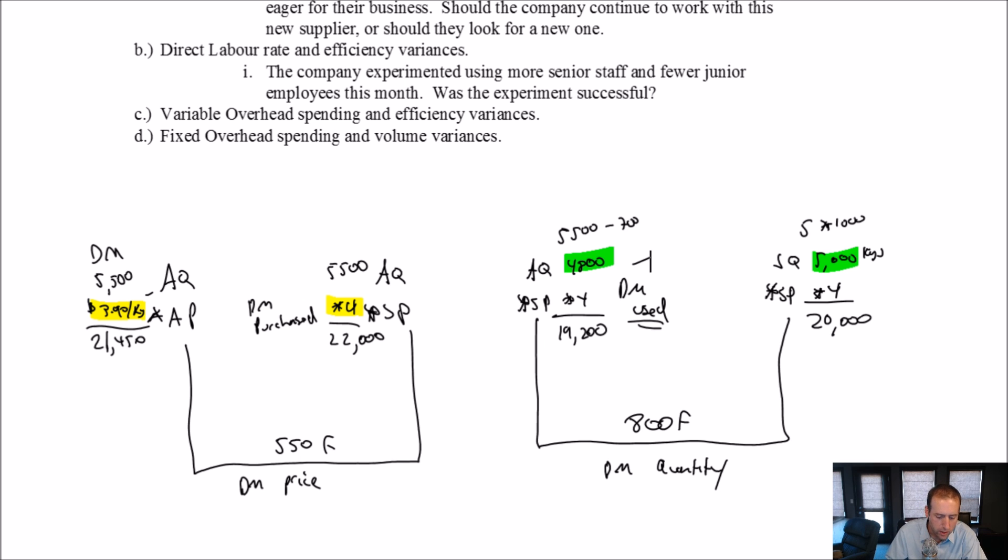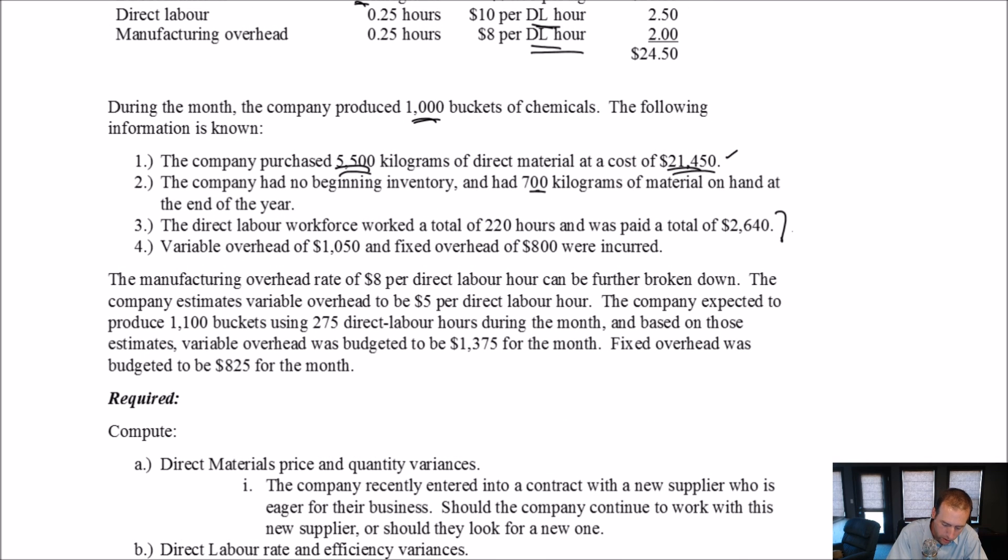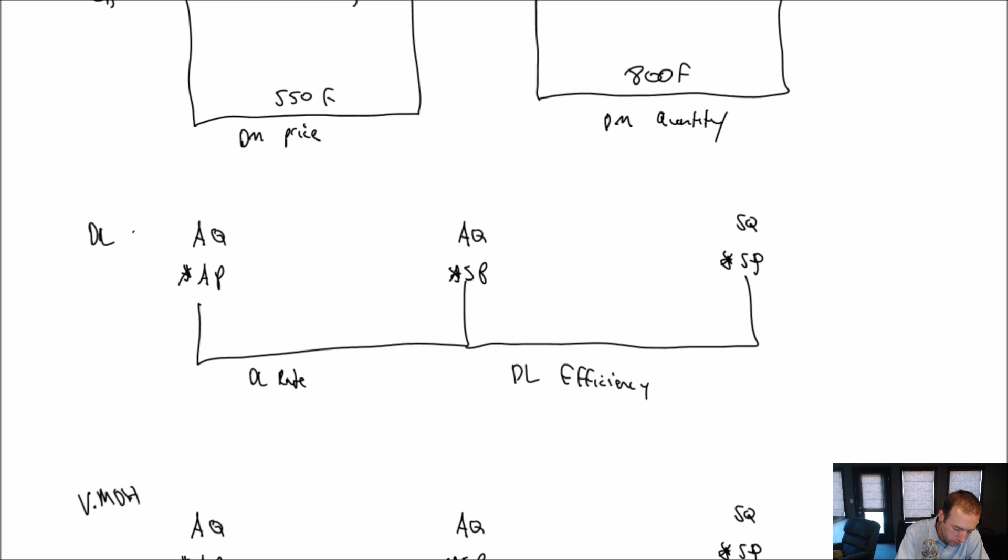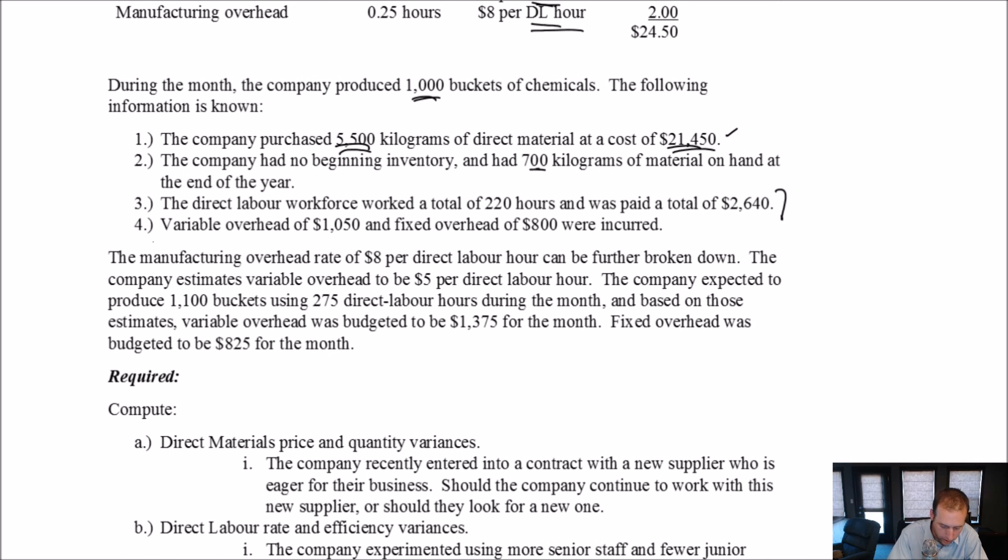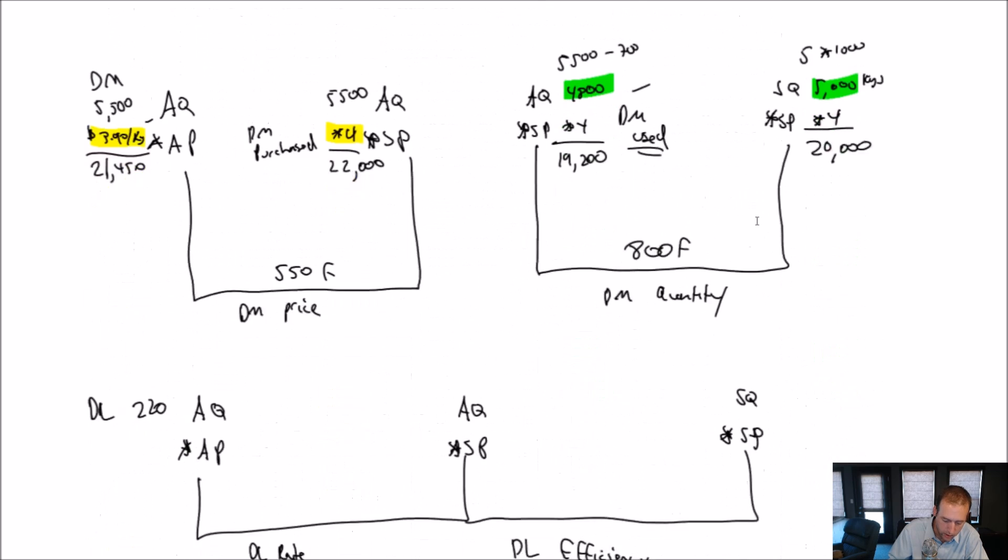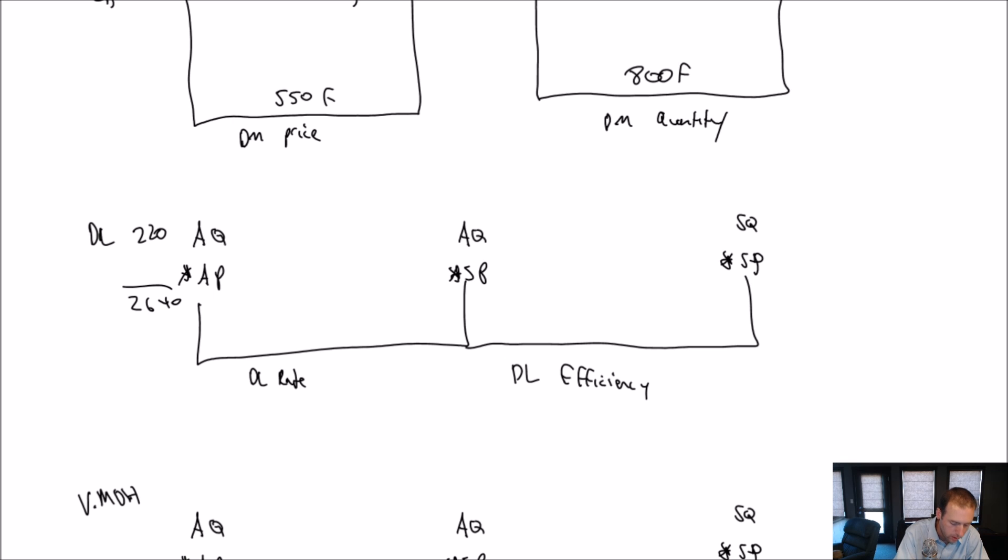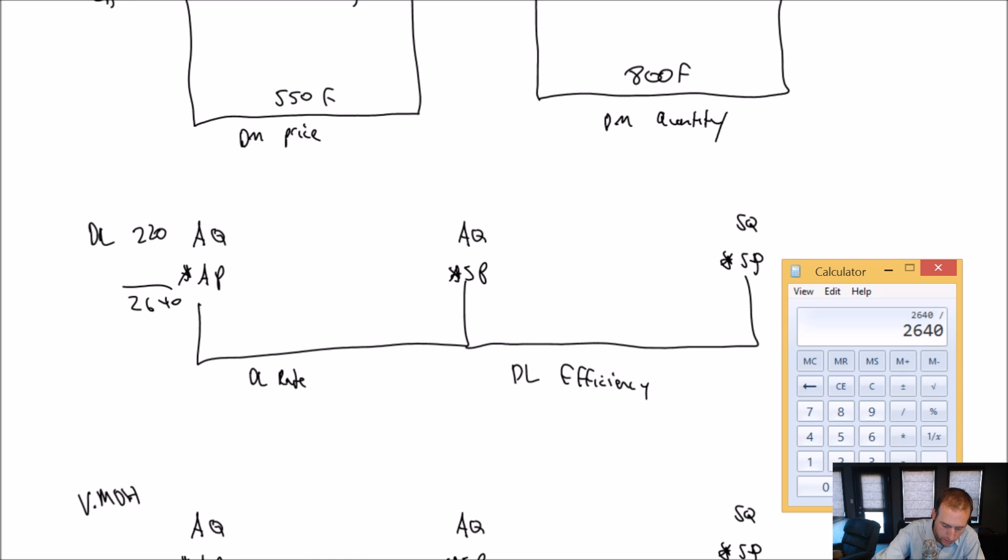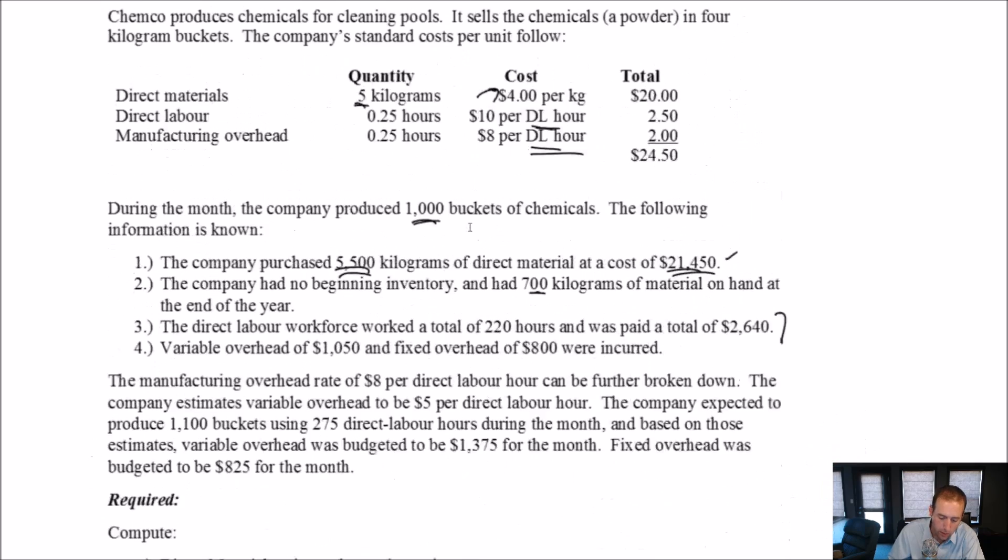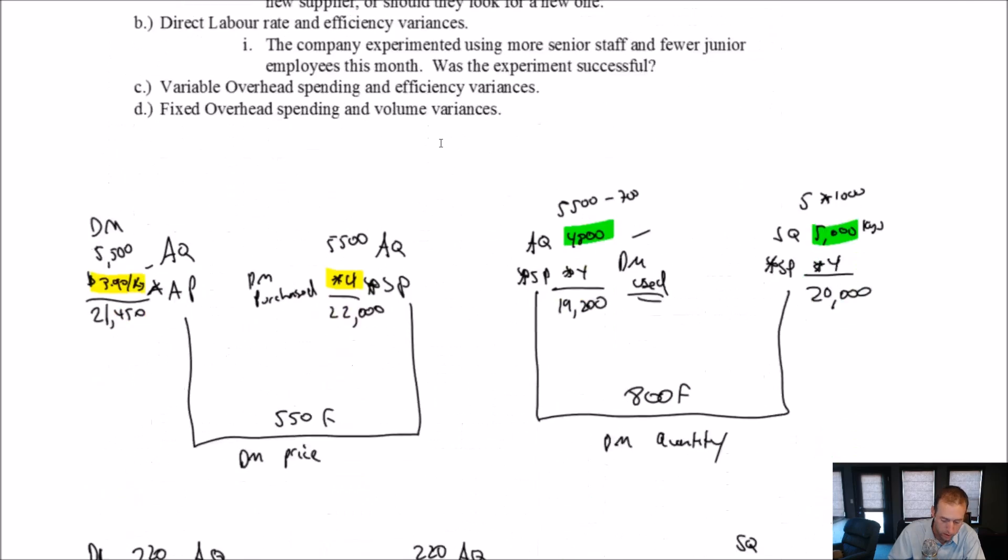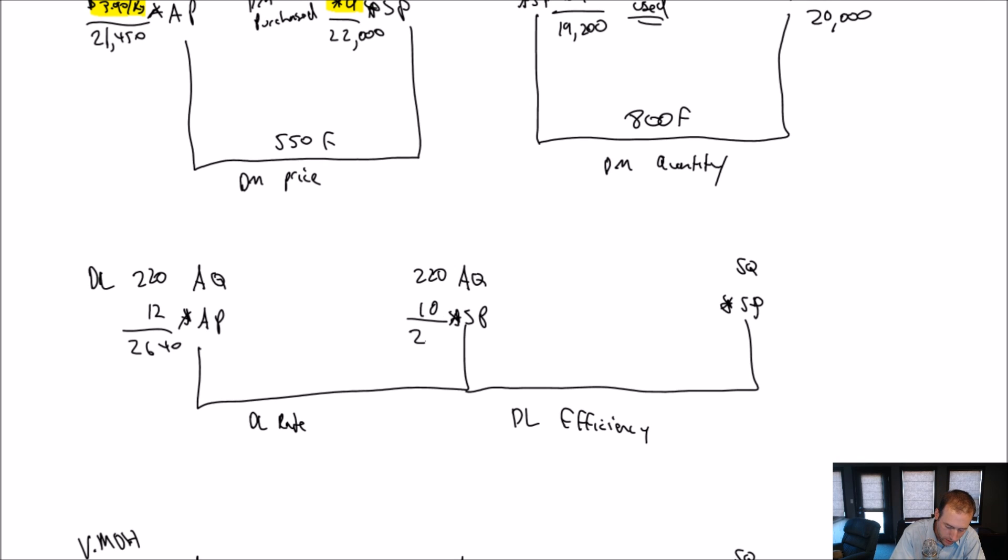Okay, B, direct labor rate and efficiency variance. So, let's see, bullet point C is our labor, or 3, rather. The direct labor workforce worked a total of 220 hours. Well, that's my AQ for labor, 220. And where are we? Didn't go up high enough. And was paid a total of $2,640. Okay, so that's the total wages for the month. It's not an hourly rate. But it's the wages I paid my employees for the month. So, $2,640 divided by 220 gives us a rate of $12 an hour. That's what I actually paid my employees. I paid them $12 an hour.